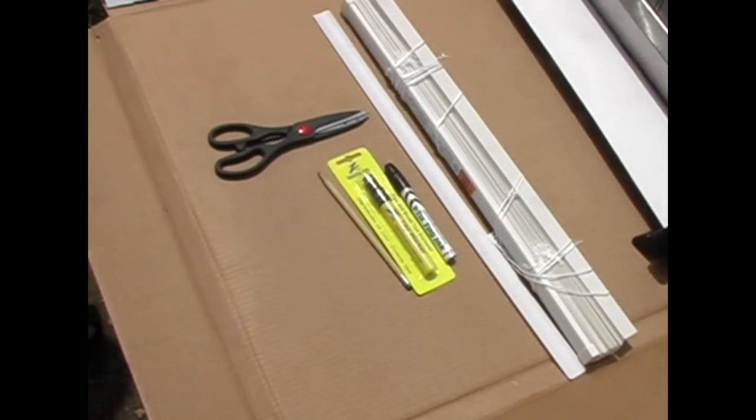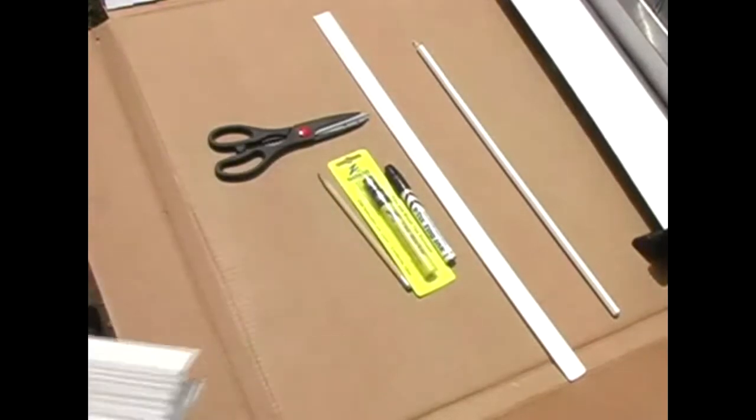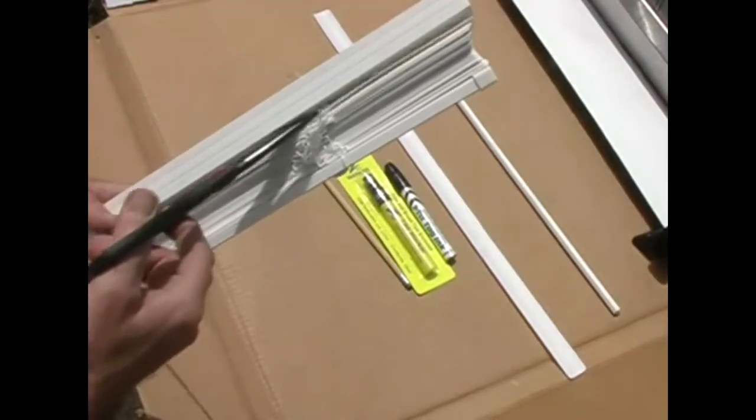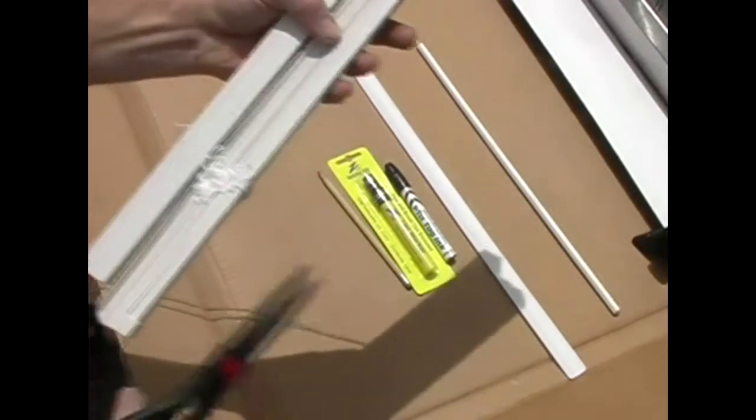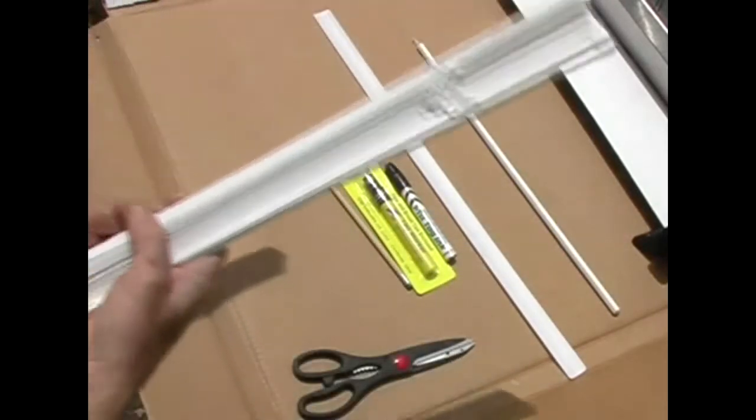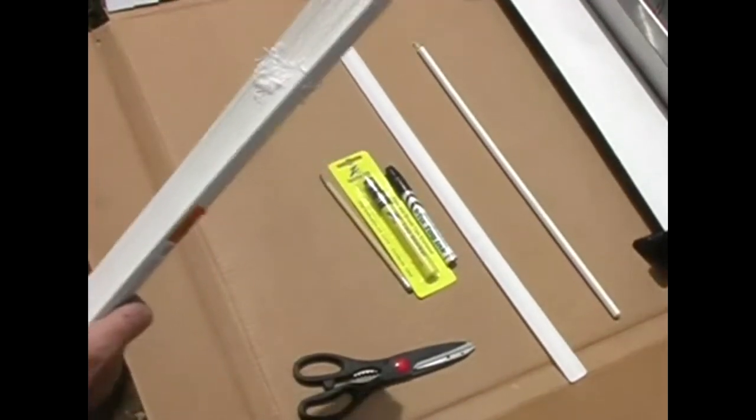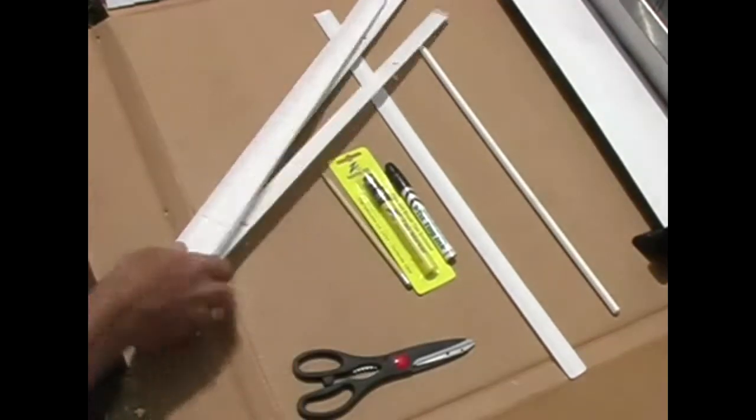First thing you need to do is disassemble your blinds. What we found the easiest way to do it was to cut the string there and there and separate your stack of them.